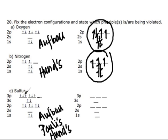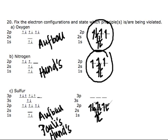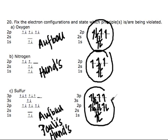Counting the electrons, we have 16 total. Starting from the lowest energy orbital: 1s gets 2, 2s gets 2. For multiple orbitals of the same energy, I like to fill 1 electron in each orbital before pairing them. Filling 2p: first 3 single electrons, then pair them up to get 6. Then 3s gets 2. For 3p, distribute one electron to each of the 3 orbitals first, then add the remaining electrons to pair up. This gives us 16 electrons total. This is the correct electron configuration for sulfur.